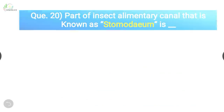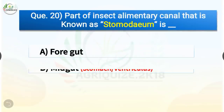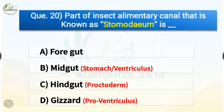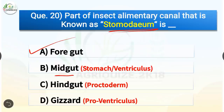Question number 20. The part of insect alimentary canal known as stomodaeum is which? The options are foregut, midgut, hindgut, or gizzard. The correct answer is option A, foregut. The part known as stomodaeum is the foregut, whereas midgut is the mesenteron, hindgut is also known as proctodeum, and gizzard is the proventriculus.